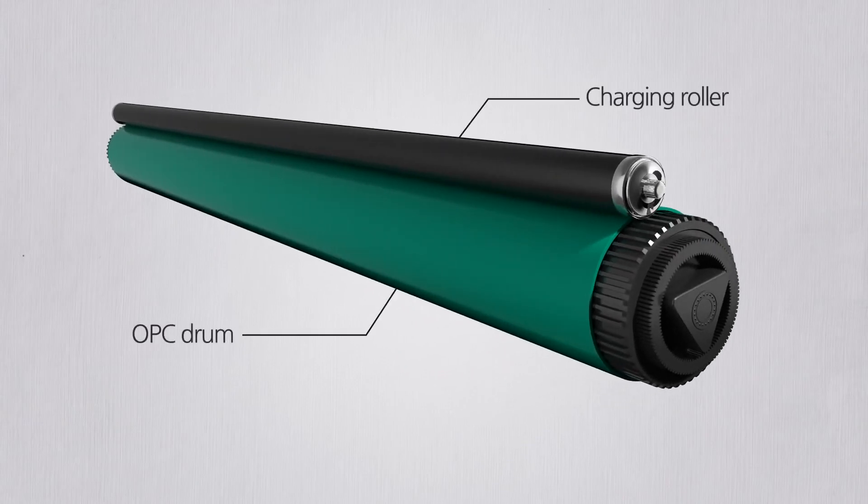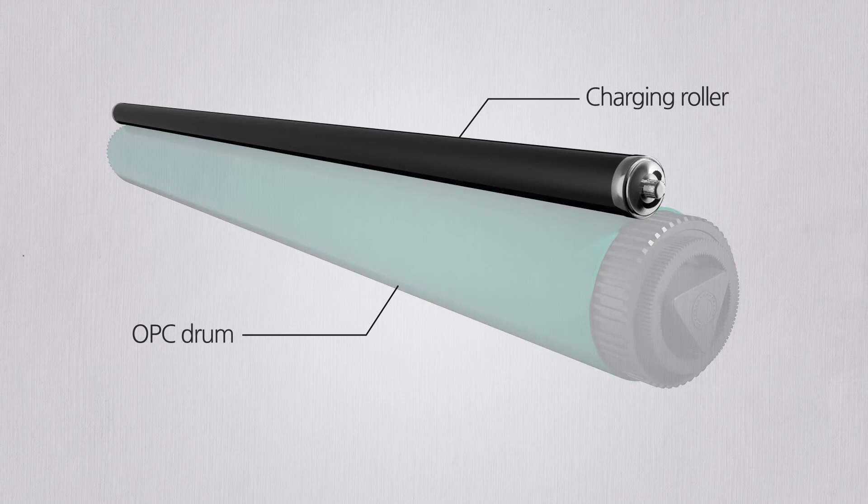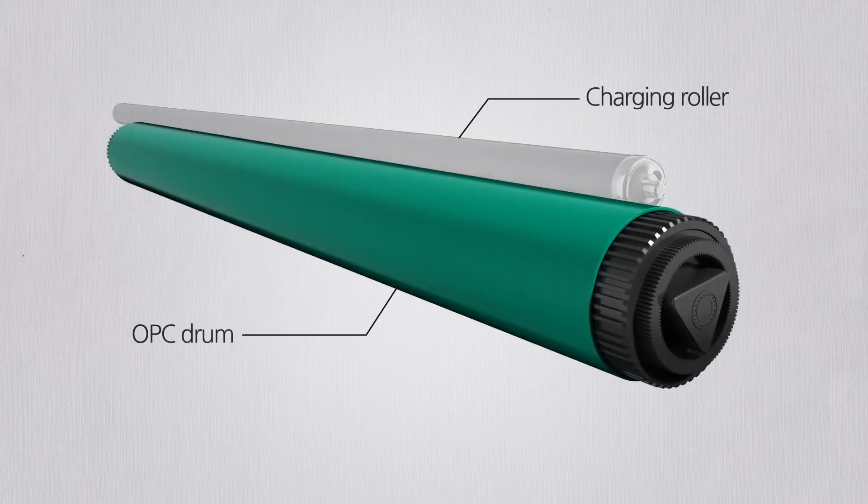One is the charging roller and the other is the OPC drum. The charging roller applies a negative charge on the OPC drum, and the drum delivers small particles called toner on the paper.